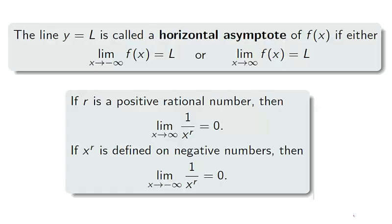To summarize, the end behavior of a function is described by its horizontal asymptotes, which are limits at infinity of the function. Our best tool for calculating limits at infinity is the expression 1 over x to the r for positive rational values r. In the second video of this section, we will calculate additional examples of limits at infinity and discuss limits at infinity which happen to be infinite.